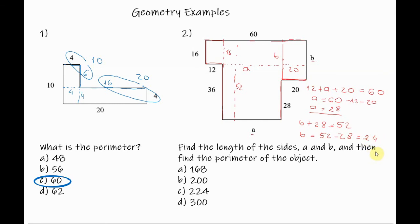Now we know both A and B and now we can find the perimeter of the object. By definition, the perimeter is the distance around the outside edges of an object.